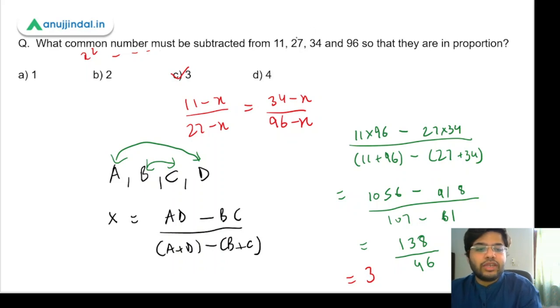Suppose the question is given what common number must be added, and some other set of numbers is given. Then also you will use the same approach, but instead you will get a negative answer.